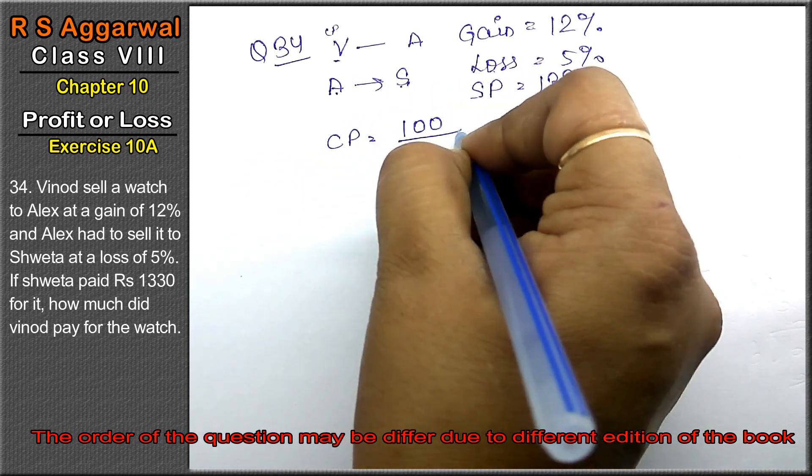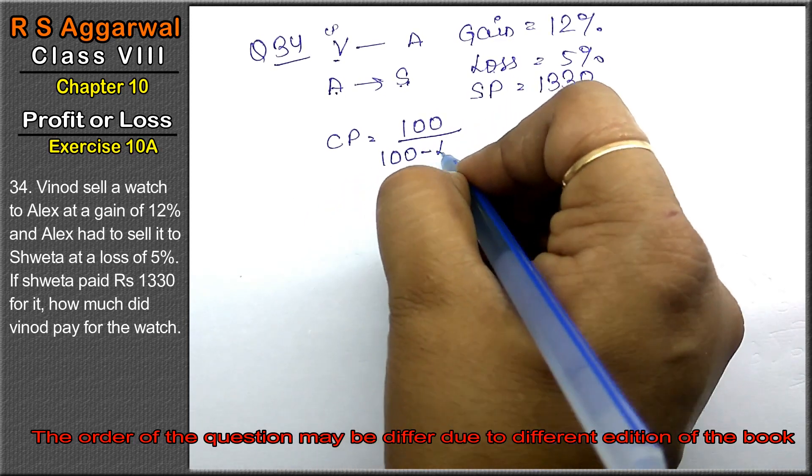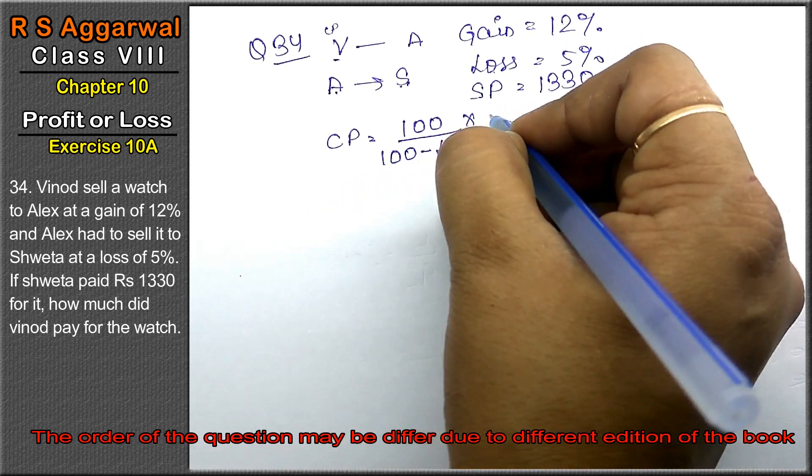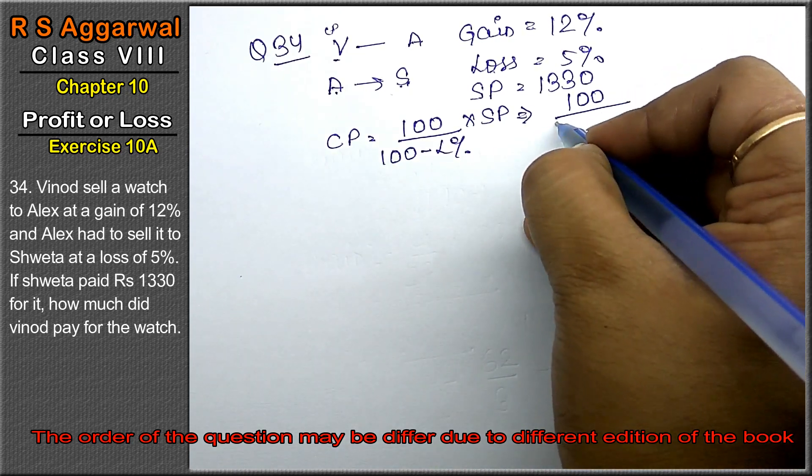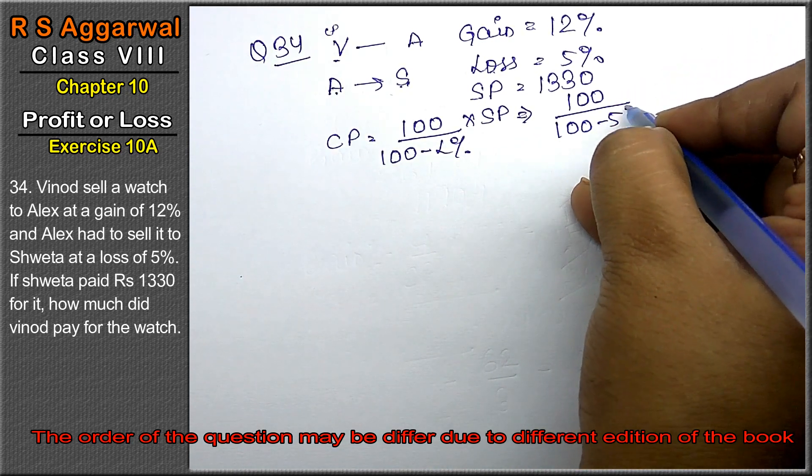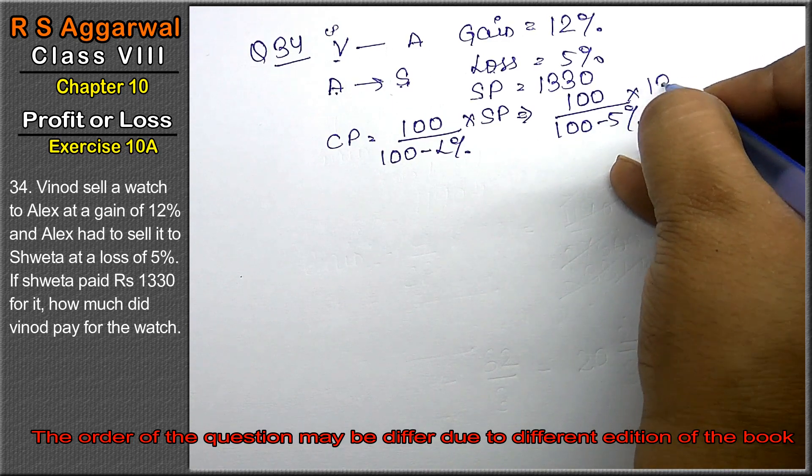CP is 100 upon 100 minus loss percent into SP. That means 100 upon 100 minus 5 percent into 1330.